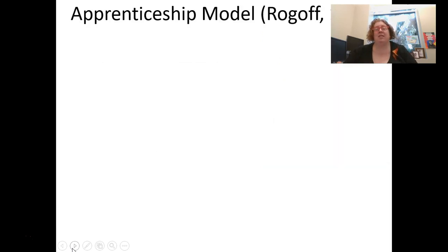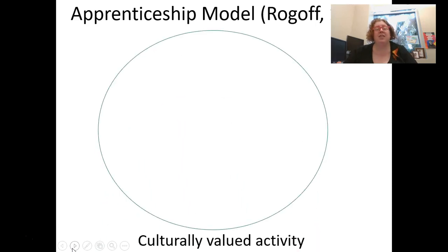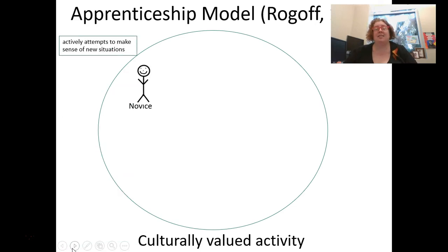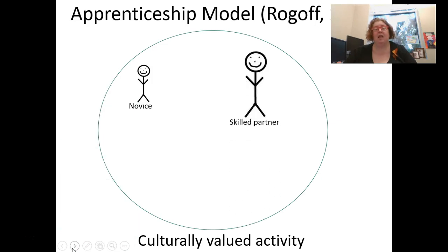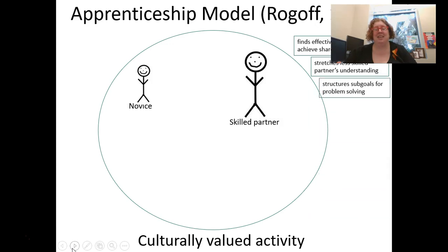Let's look at the apprenticeship model designed by Rogoff in 1990. We have some sort of culturally valued activity — an activity that people want to be a part of. We have a novice who is actively attempting to make sense of the situation, and they have a skilled partner who finds effective ways to achieve shared thinking, stretches the less skilled partner's understanding, and structures sub-goals for problem solving.